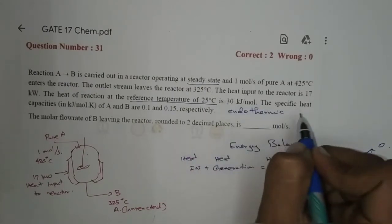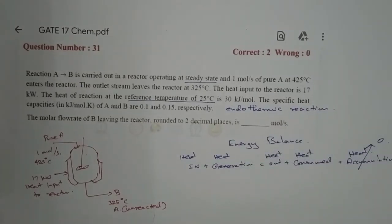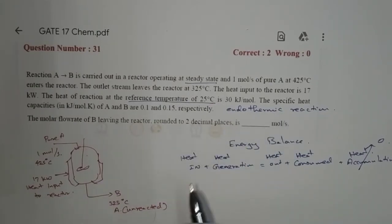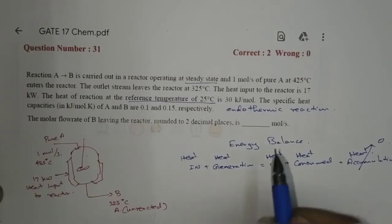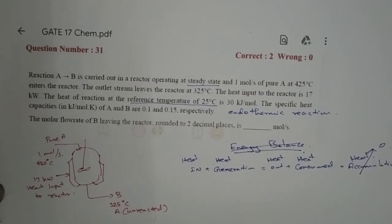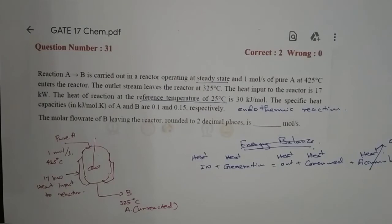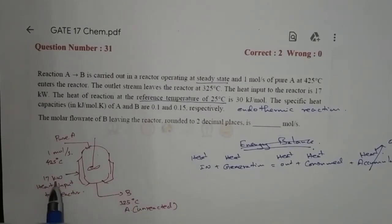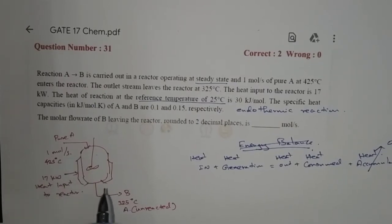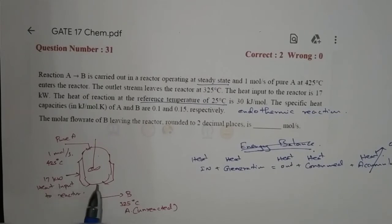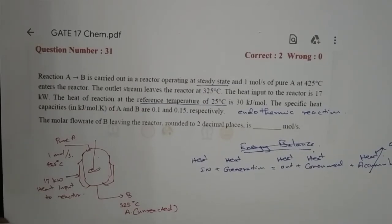In an endothermic reaction, heat is absorbed by the reaction, whereas in an exothermic reaction, heat is released. So in the energy balance, an endothermic reaction consumes heat from the system, while an exothermic reaction generates heat. Now we will move on to setting up the energy balance.